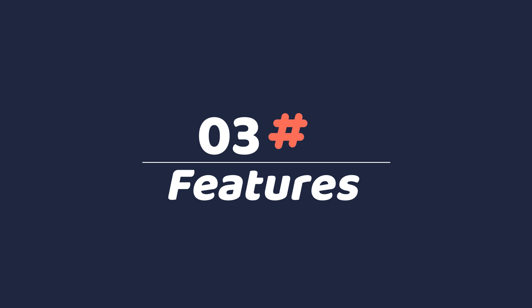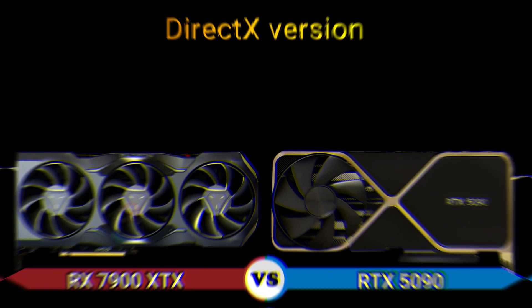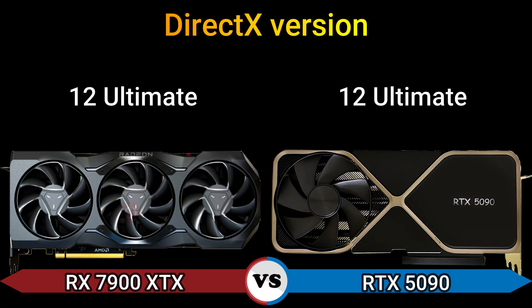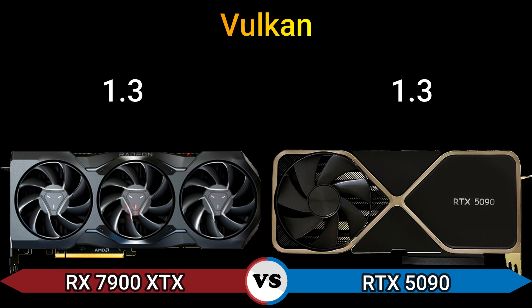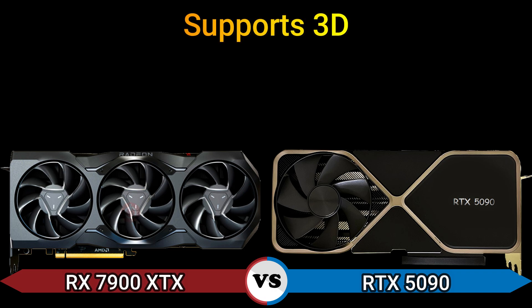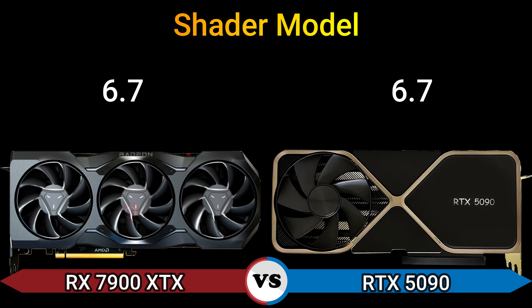Part 3 — Features. DirectX version: 12 Ultimate. OpenGL version: 4.6. OpenCL version: 2.2 and 3.0. Vulkan: 1.3 and 1.3. Supports 3D: Yes. Shader Model: 6.7.